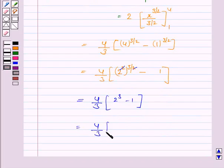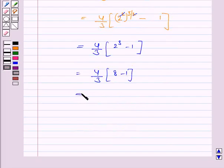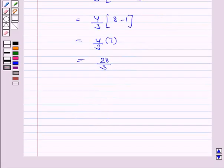(4/3) times 7 equals 28/3. Therefore, the required area is 28/3 square units.